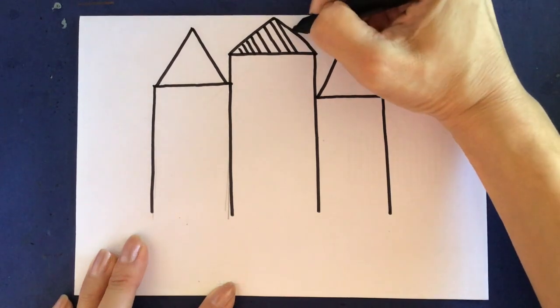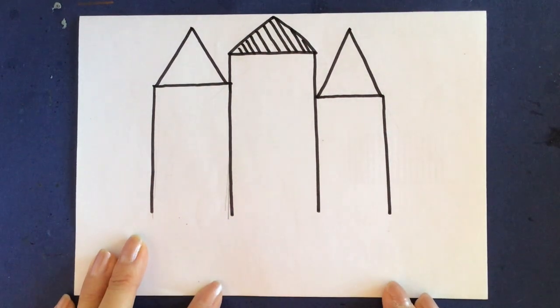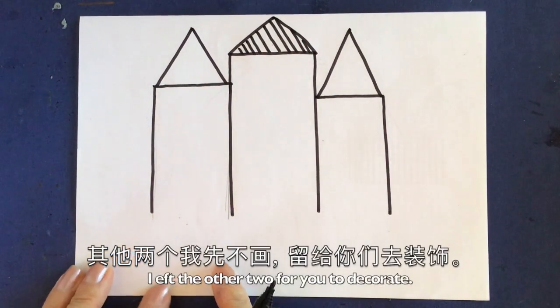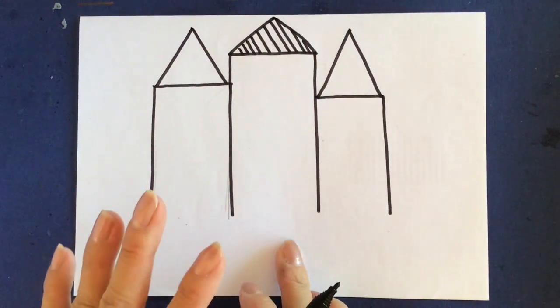同学们可以用不同的图案来装饰你画的房顶。You can use different patterns to decorate the roof. 这里我使用斜线来装饰这个房顶。Here, I use diagonal lines to decorate this one. 其他两个我先不画,留给你们去做装饰。I left those two for you to decorate.